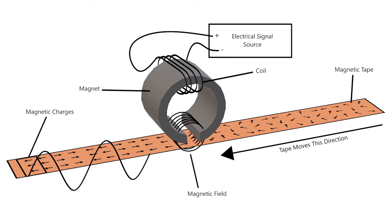The record head on a tape machine is an electromagnet, meaning that its magnetic field alternates with the current that runs through it. The electrical signal from a microphone is sent through the electromagnet, which creates a magnetic field that resembles the sound wave captured by the microphone. As the tape passes through that magnetic field, the particles along it are magnetically charged, and the pattern of magnetic charges along the tape now resembles the sound wave captured by the microphone initially.